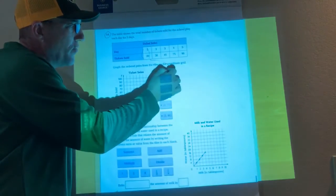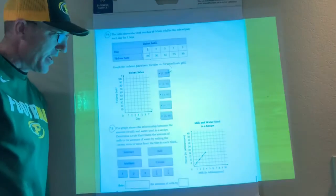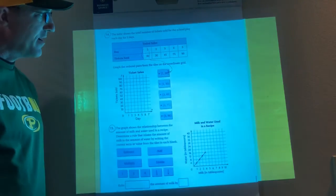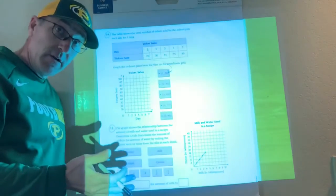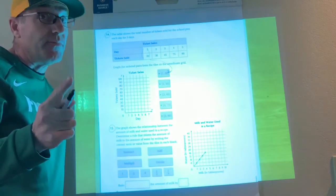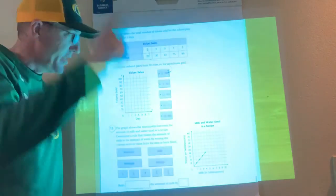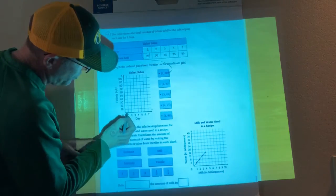Graph the ordered pairs from the table on the coordinate grid. So what do I do if I want to go 1,20? I go over 1 and up to 20. Notice that their scale is different on the left than it is on the right. Then it says 2,30, so I go over to 2 and up to 30.